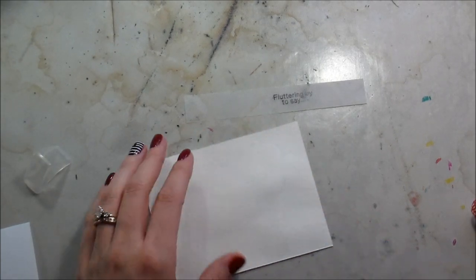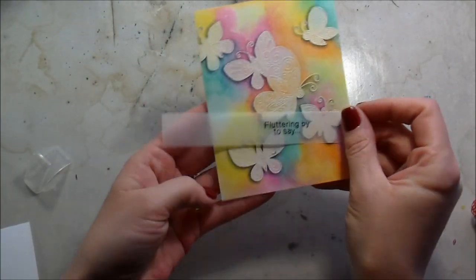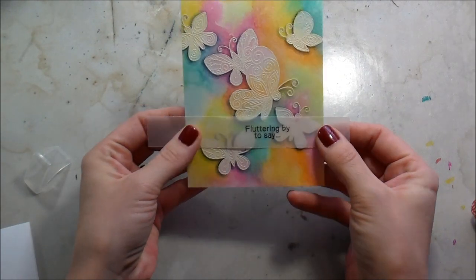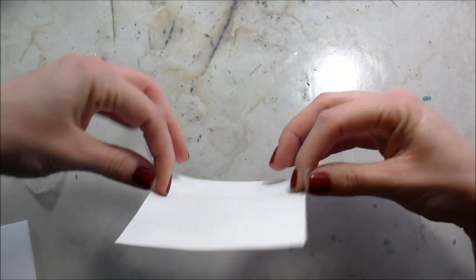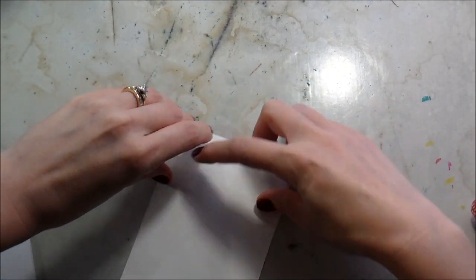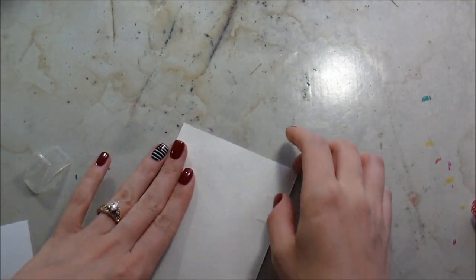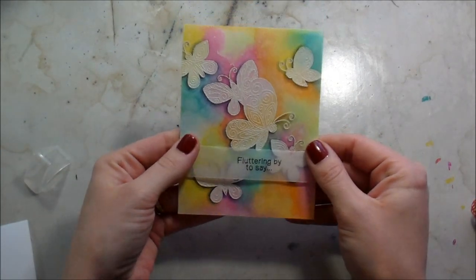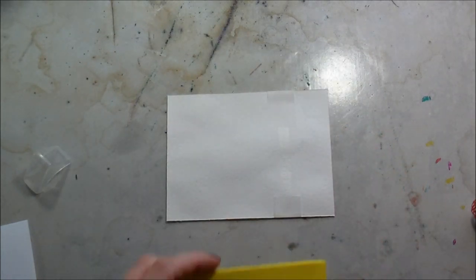So when you're stamping on anything that's like vellum, acetate, anything like that you want to go straight down straight back up. That's the easiest way to get it without smearing. So that's what I did and then I'm going to put adhesive on the back and just wrap it around so that way you won't see any adhesive underneath that vellum on the card front.